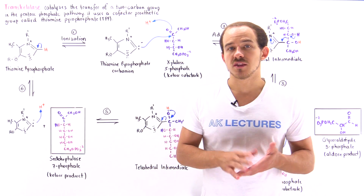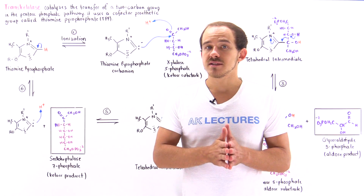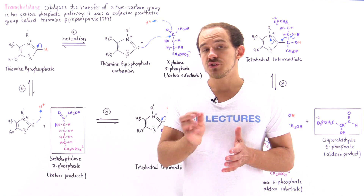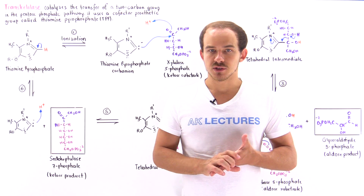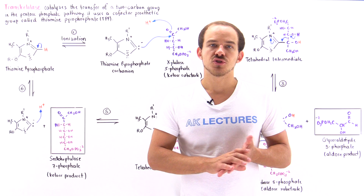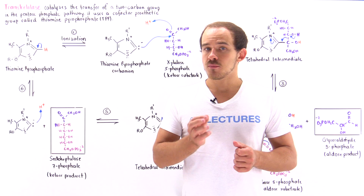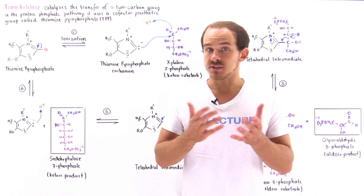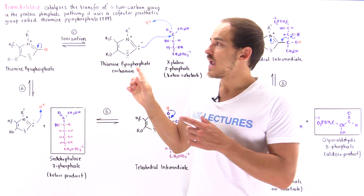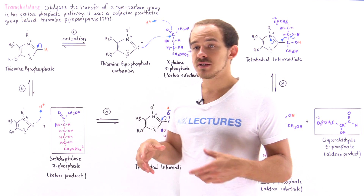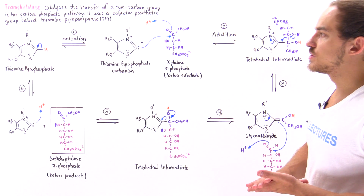In this lecture, we focus on the reaction mechanism of transketolase — the enzyme that catalyzes the transfer of a two-carbon component from one sugar molecule onto another. That reaction occurs as a result of an important cofactor molecule, a prosthetic group known as thiamine pyrophosphate or TPP, which acts as a nucleophile.